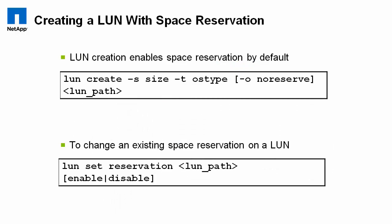LUN creation enables space reservation by default. So if you run the LUN setup wizard or the lun create command, unless you specify the -o noreserve option in the lun create command, you will have a fully reserved LUN. If you create a fully reserved LUN and wish to change that later on, you can run the lun set reservation command. This command is a little confusing in that the order of variables is not the standard order you're used to: it's lun set reservation, then the LUN path, then the variable value — a little out of order, but it is what it is.